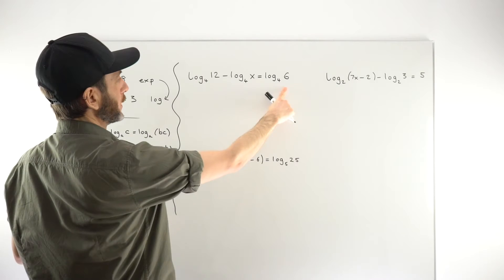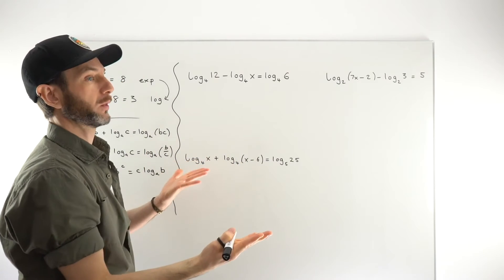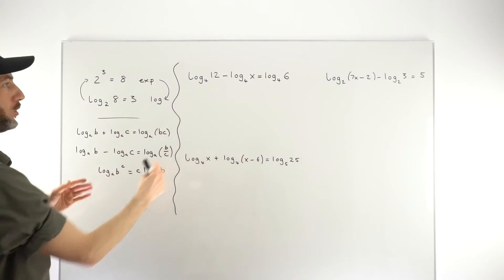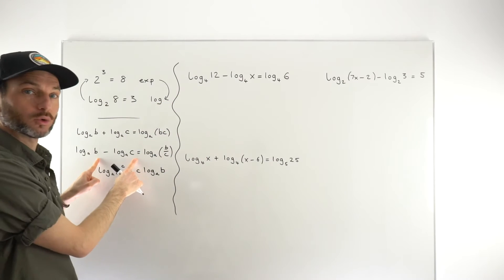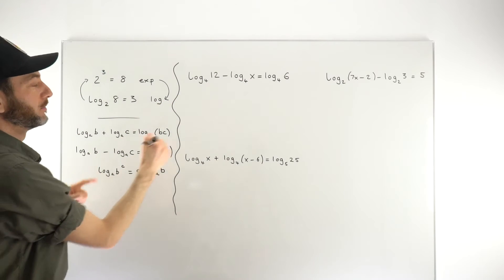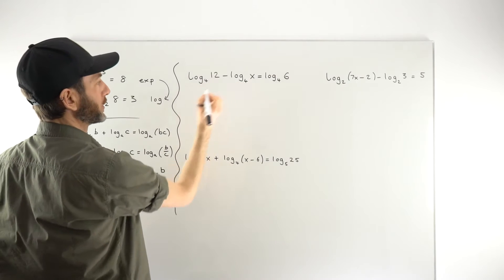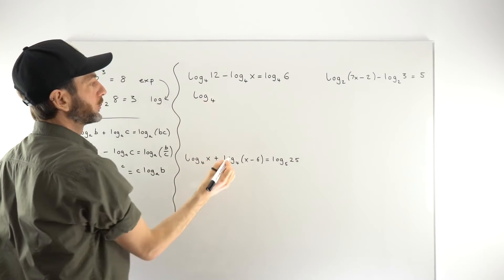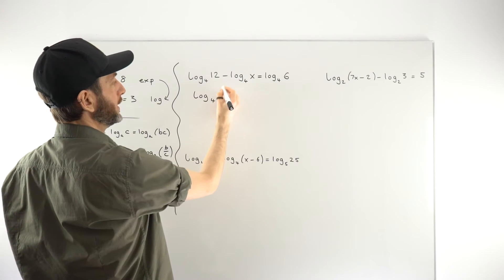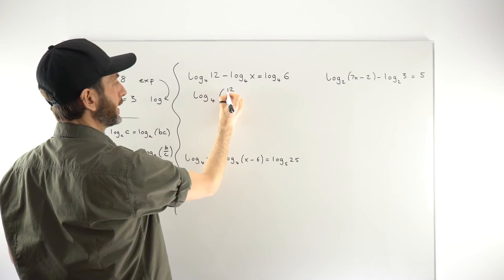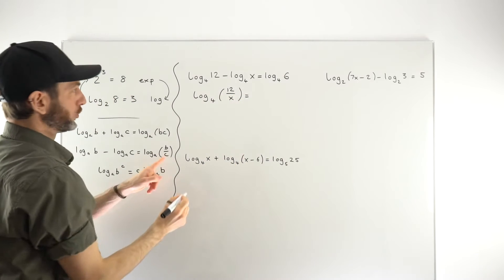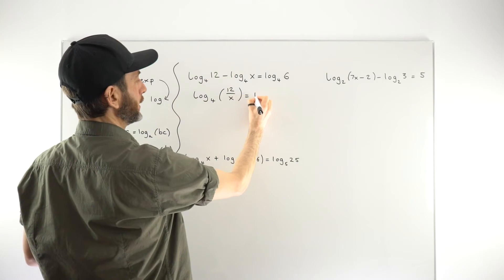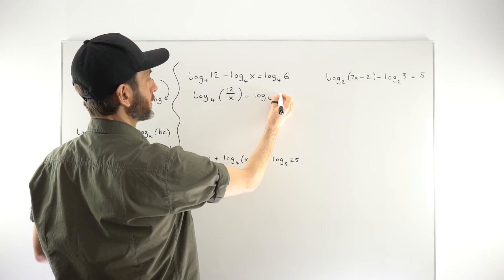Looking at this first equation, what can we do? Well, sometimes you've just got to think, which rule is applicable? This here is in the format to use this middle rule. So we could just go ahead and combine that into one single log. We've got the same base number, so we're good to go. So this would be log to base 4 of 12 over x, just by using this rule, dividing the 12 by the x, that equals log to base 4 of 6.